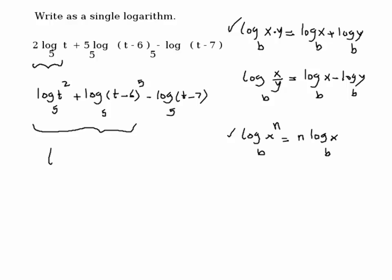So again, combine this into log of the first term is t squared. The second term is t minus 6 to the power of 5. That's how you can combine them.